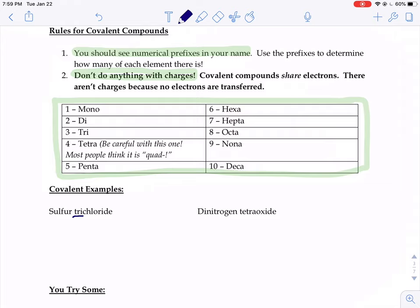So that first one just says sulfur. It doesn't say disulfur, trisulfur, tetrasulfur, just sulfur. So you write down just sulfur and then trichloride. Well, chloride sounds an awful lot like chlorine. Trichloride means three chlorides.